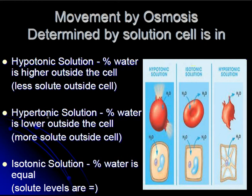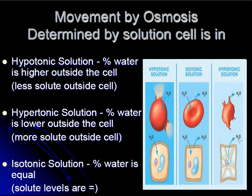Now let's consider when cells are in hypertonic solutions. This is when there's more solute outside of the cell, meaning that the percentage of water is going to be lower outside of the cell. Cells in hypertonic solutions will tend to have water move from inside of the cell to outside of the cell, and this will cause the cell volume to decrease.